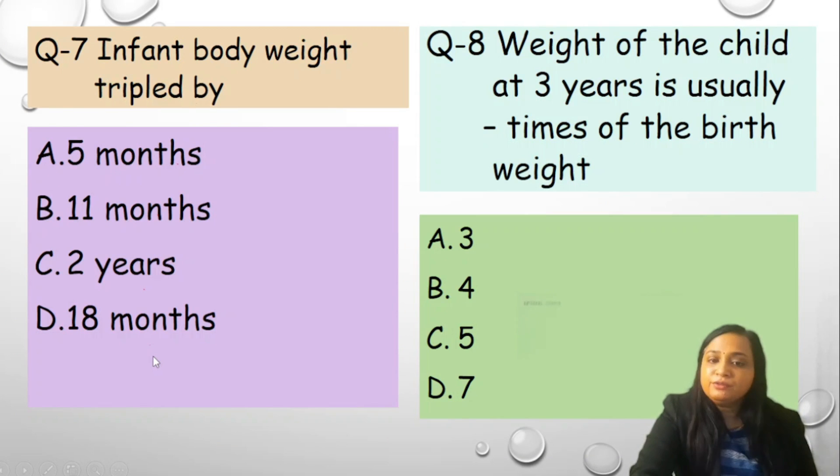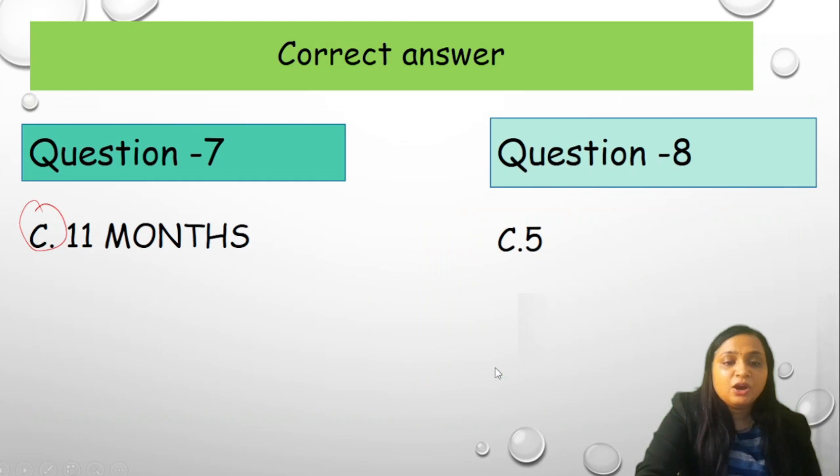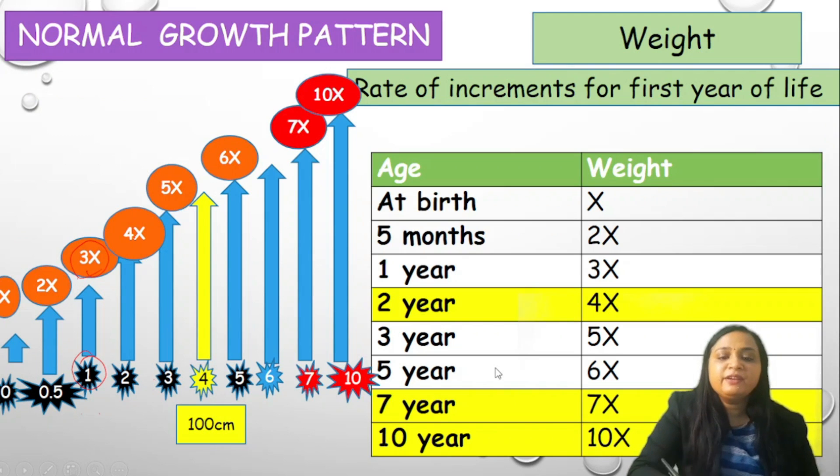Question number 8, weight of the child at 3 years is usually how many times of the birth weight? I think you should all know now. A is 3, B is 4, C is 5 and D is 7. Correct answer is option C that is 5. We already discussed 3 years 5x, 4 years 6x. Sorry, 3 years, 2 years 4x, 3 years 5x. At the 3 years it is 5 times of birth weight.